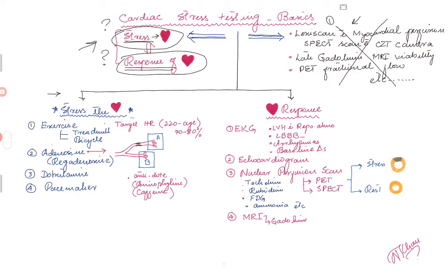Here I have listed some of the ways we can stress the heart. The most easy way is to have the patient exercise, and by far this is the best way. Not only can you see how the heart is behaving, but you can also look at other features that help you risk-stratify the patient — for example, how the heart rate went up, how it came down once the patient stopped exercising, what the blood pressure did, what EKG changes occurred. So if your patient can exercise, it is preferred that you have them do so to reach the target heart rate.